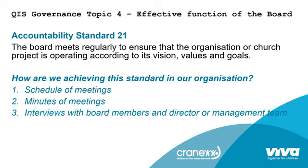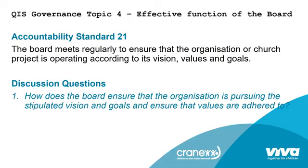Standard 21: the board meets regularly to ensure that the organization or church project is operating according to its vision, values, and goals. Evidence includes a schedule of meetings, minutes of meetings, and interviews with board members and management to check whether they are aware of their vision and are pursuing their values and goals. The discussion question is: how does the board ensure that the organization is pursuing its stipulated vision and goals, and how does it ensure that the values are adhered to?